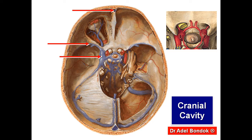This is the cavernous sinus. The four nerves in the lateral wall of the cavernous sinus are the oculomotor, trochlear, ophthalmic, and maxillary nerves.